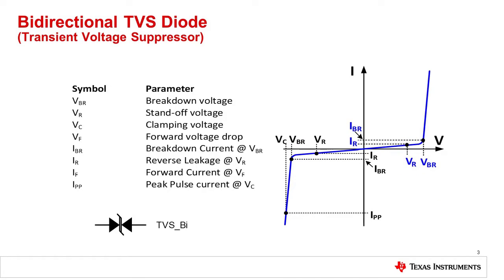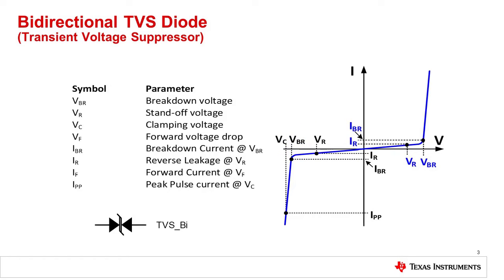A breakdown of 17 volts indicates that the device will turn on for voltages greater than plus 17 volts or less than minus 17 volts. This kind of TVS device is useful for protecting against bi-directional input signals. For example, if you want to limit the input range of an ADC to plus or minus 15 volts and protect against fault signals greater than plus or minus 17 volts, you could use a bi-directional TVS diode with a standoff voltage of 15 volts and a breakdown voltage less than 17 volts.